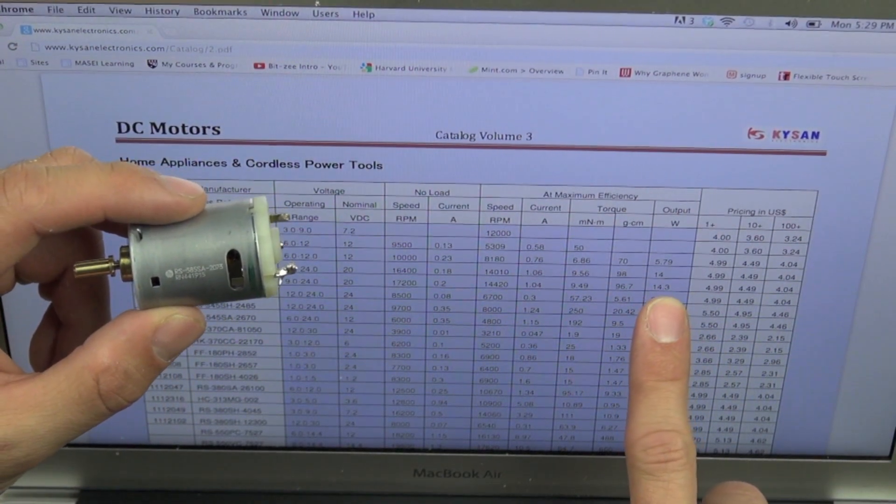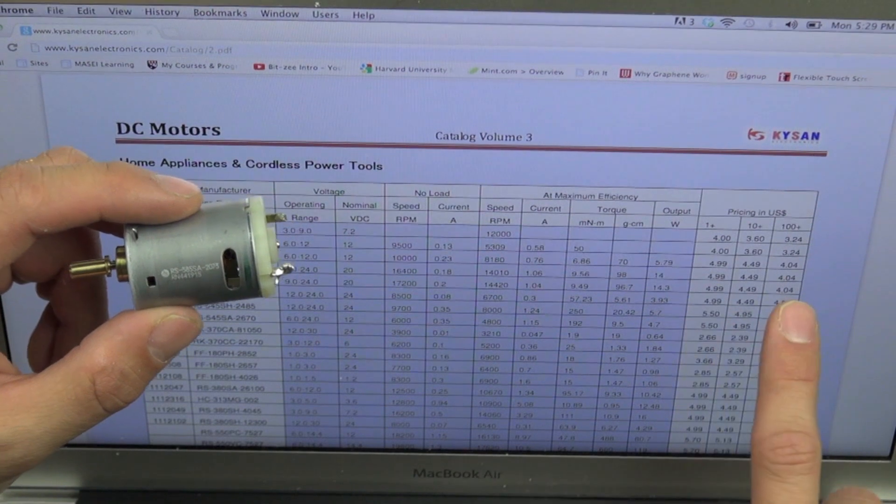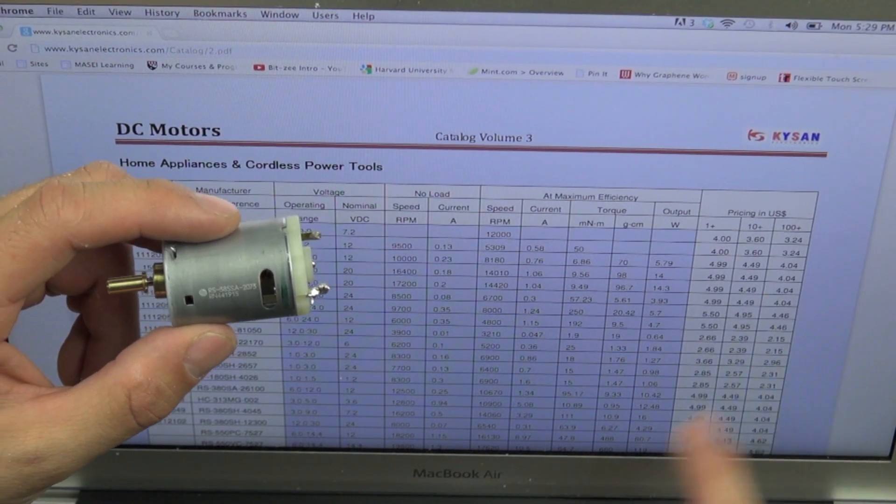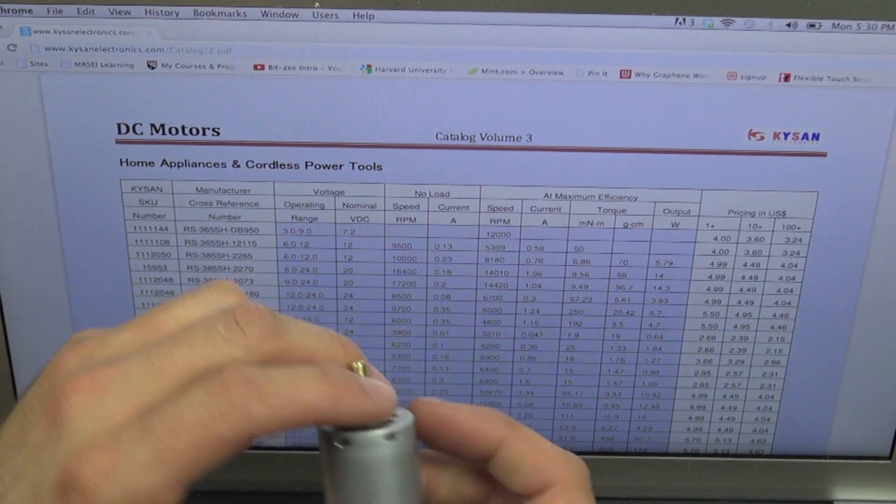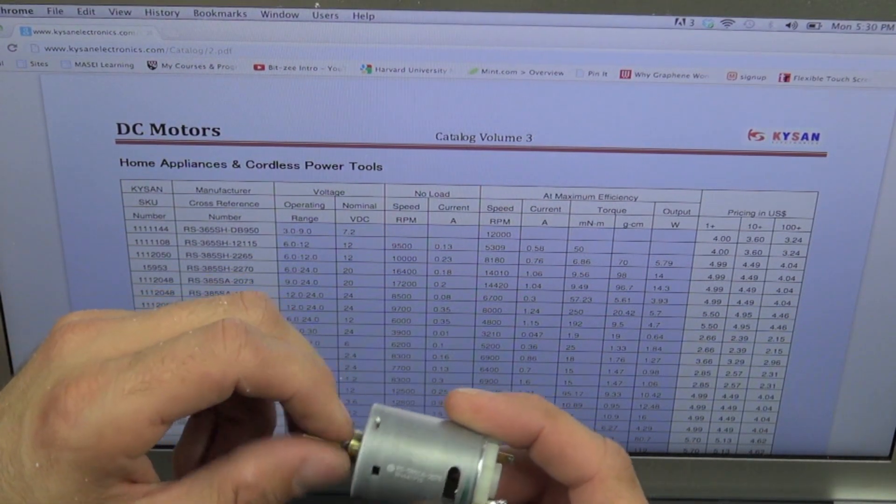So 14.3 watts and you can buy it, they've got a price list here for around 4 to 5 dollars depending on how many you buy. Okay, so we have a good idea of what the specs for this motor are.